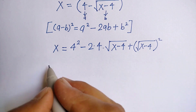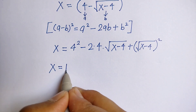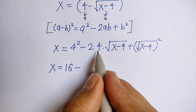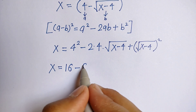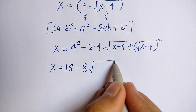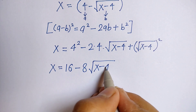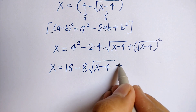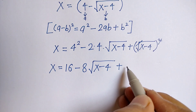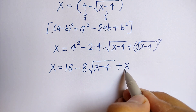Now x is equal to 4 square is 16, minus 2 into 4 is 8, times root x minus 4, plus — here the square and square root get cancelled — the remaining is x minus 4.